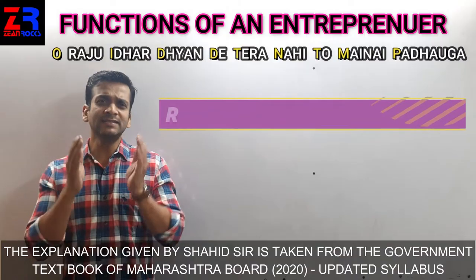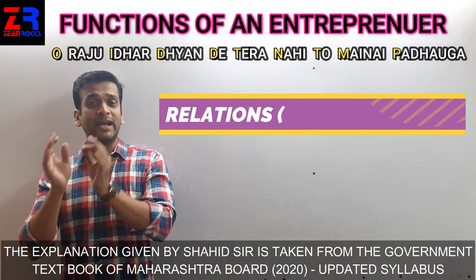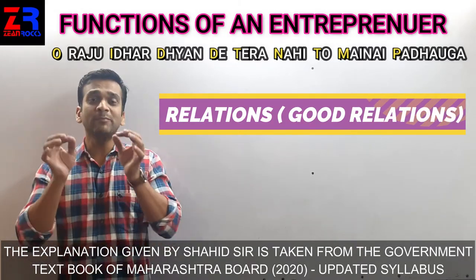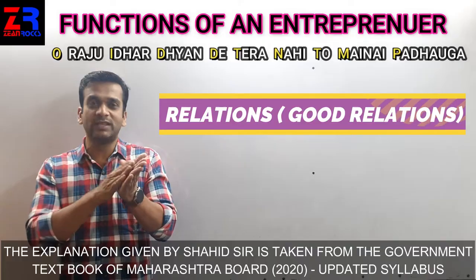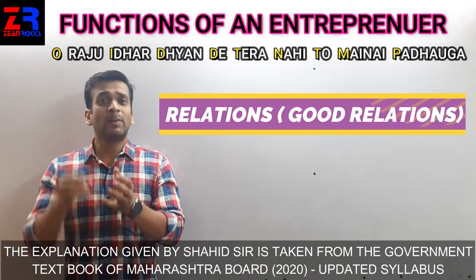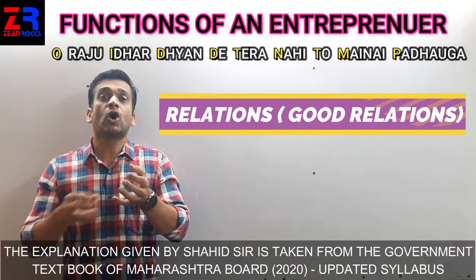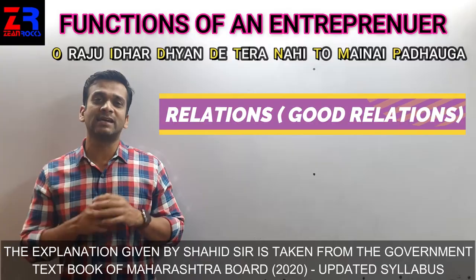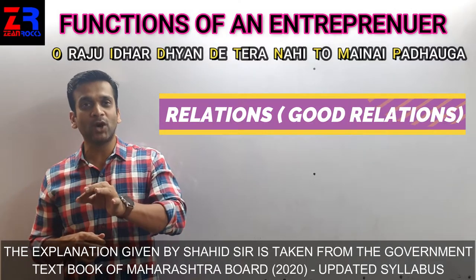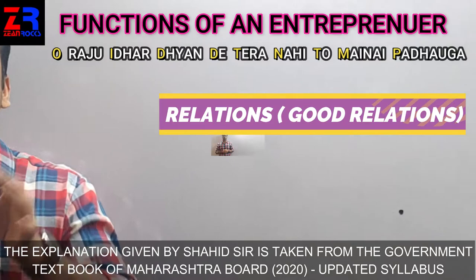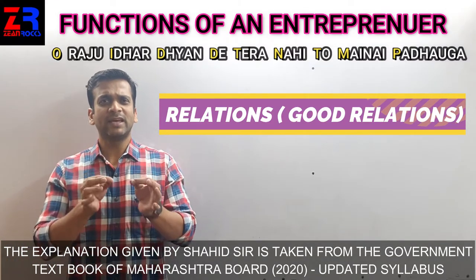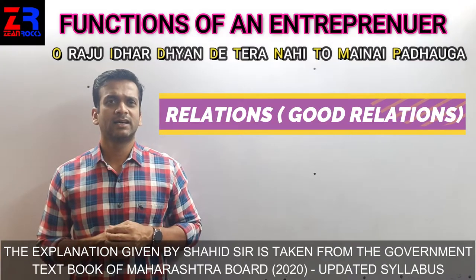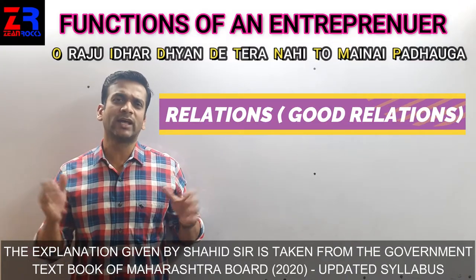Point number two is maintaining good relations. It is necessary to maintain a good working atmosphere in the organization. This atmosphere is created by maintaining good relations with subordinates — not only subordinates but everybody connected with the business. Coordination between employees is the key to success. Every businessman must maintain good relationships with subordinates, creditors, bankers, and all those who remain in the organization.